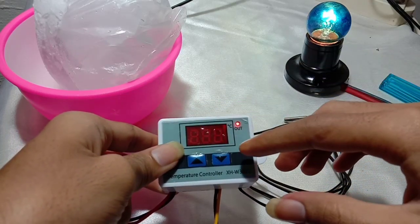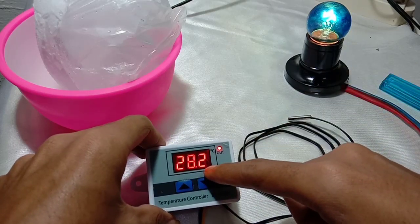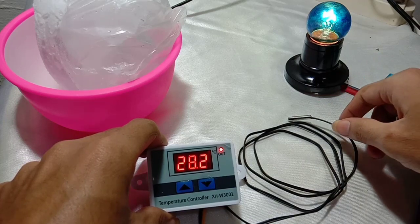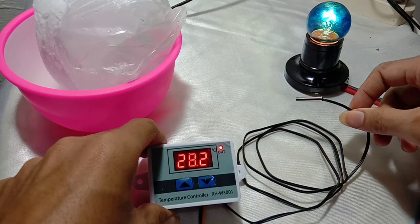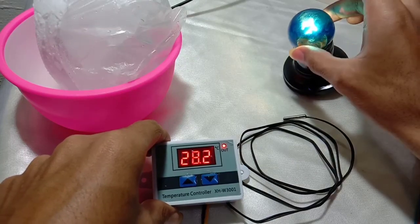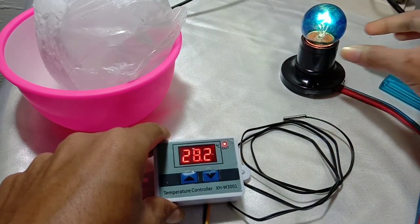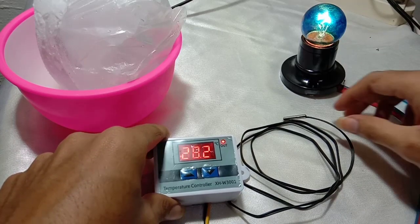The current temperature is 28.2, it is below 37.5, so the electricity will be connected. You can see the output here is a lamp. This lamp is the output, the electricity is connected right now.